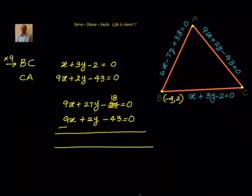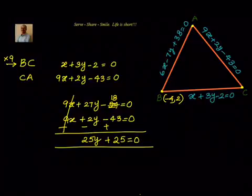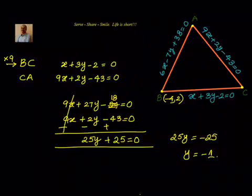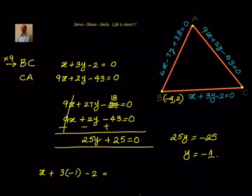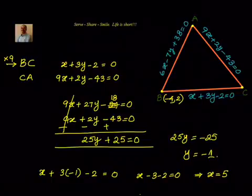When we subtract them, 9x cancels, giving 25y minus 11 equal to 0 — that is, 25y equal to minus 25, so y equal to minus 1. Substituting back into the first equation: x plus 3 into minus 1 minus 2 equal to 0, giving x minus 3 minus 2 equal to 0, so x equal to 5. The coordinates of C are (5, minus 1).